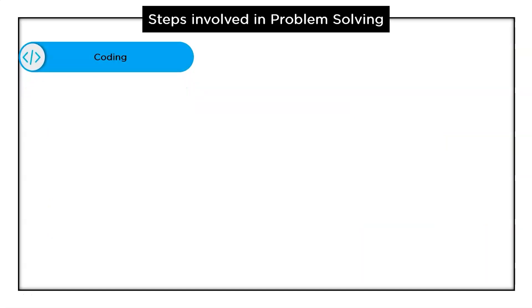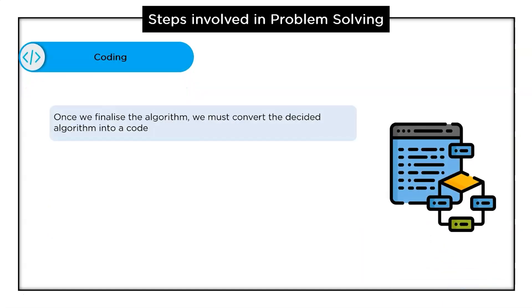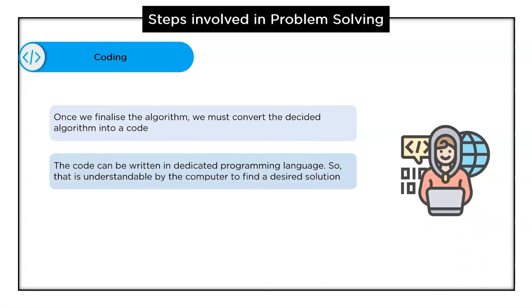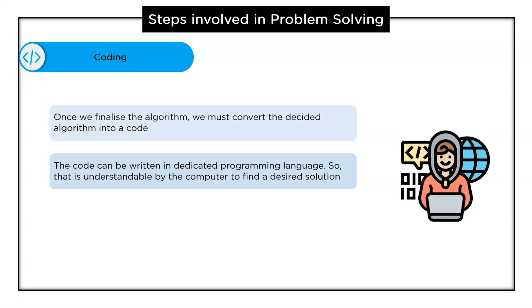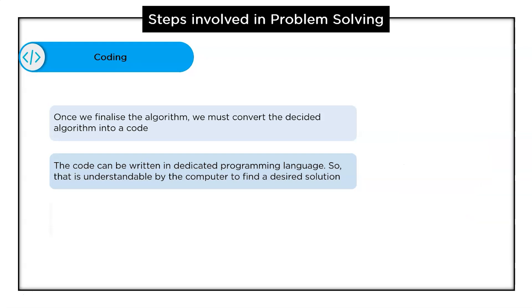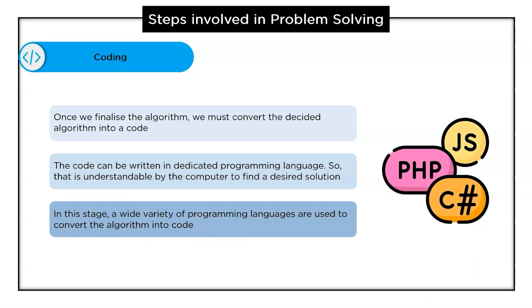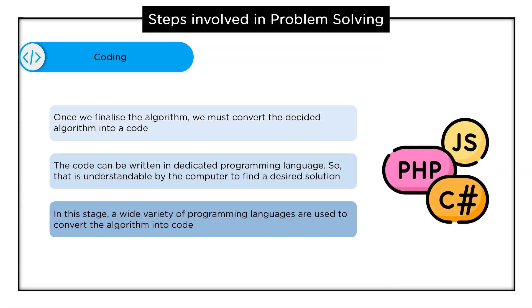And the next step in the list is coding. Once we finalize the algorithm we must convert the decided algorithm into code. Once we are done with the algorithm we have to code or program using a dedicated programming language that the computer understands to find the desired solution. In this step a wide variety of programming languages are used to convert the algorithm into code.